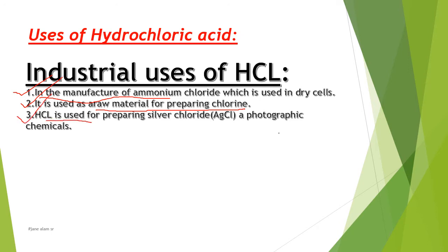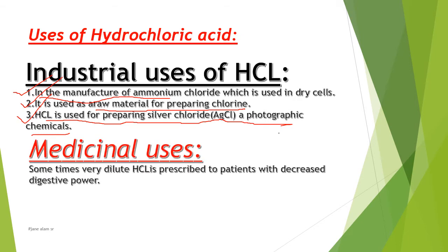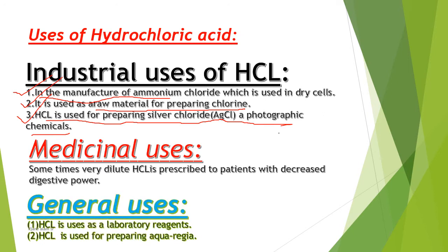Number 3: HCl is used for preparing silver chloride, a photographic chemical. Medicinal uses: Sometimes very dilute hydrochloric acid is prescribed to patients with decreased digestive power.